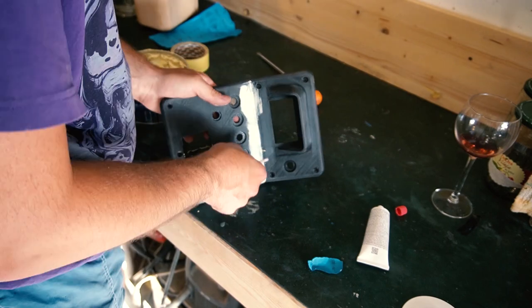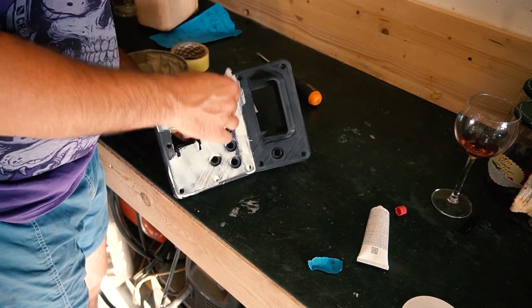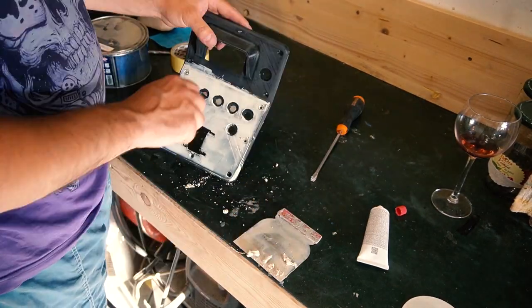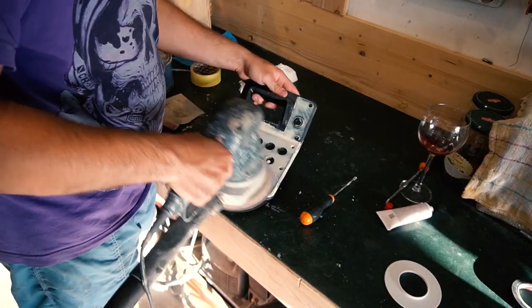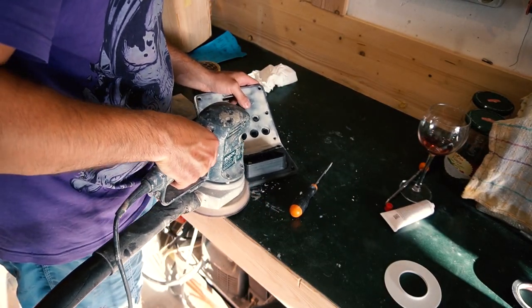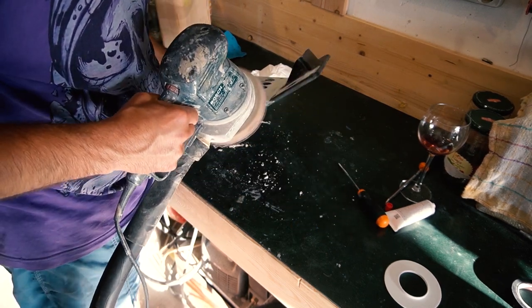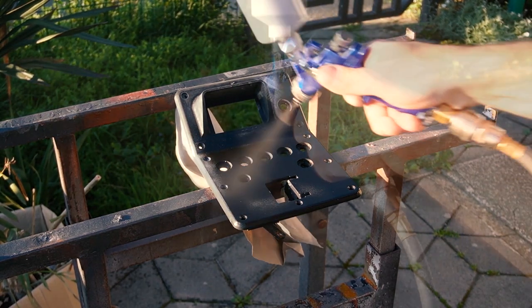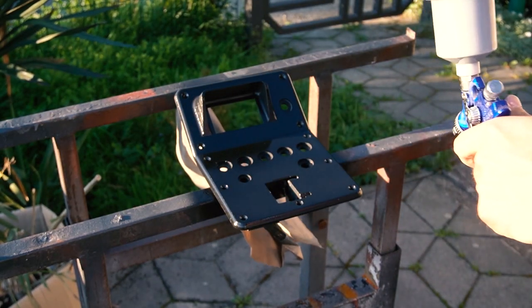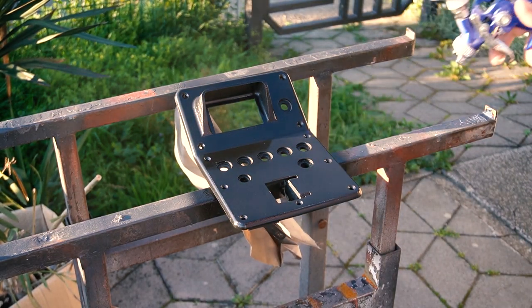First I'm using some car body filler to fill in the larger imperfections in the 3D printed part. After sanding it I am using spray filler to fill in some smaller imperfections that were left from the previous operation.